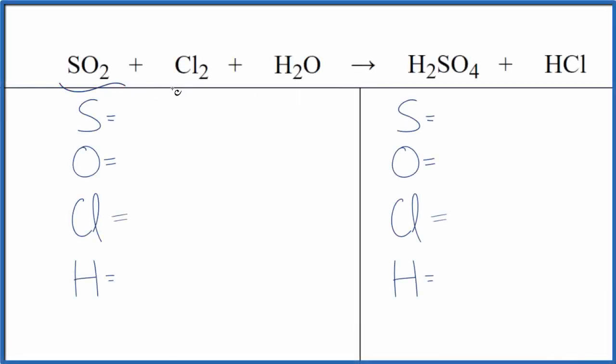Let's balance the equation SO2 plus Cl2 plus H2O gives us H2SO4 and HCl. So the first thing we need to do is count the atoms up. That looks like this.